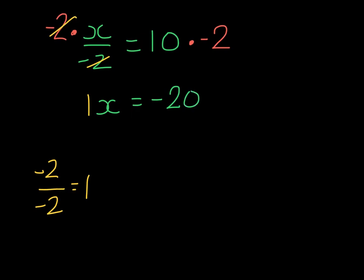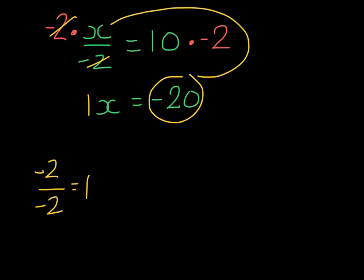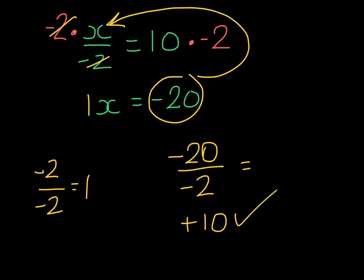At this point I can take the solution, substitute it into the original equation, and see if negative 20 divided by negative 2 gives us 10. We know that 20 divided by 2 is 10, and when we divide two negative numbers we get a positive answer. So this has been done correctly.